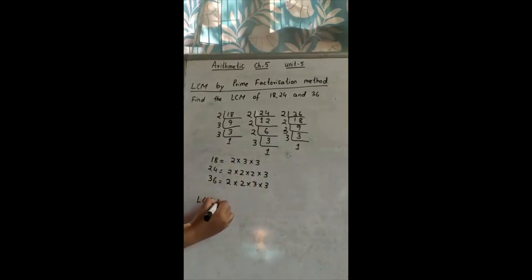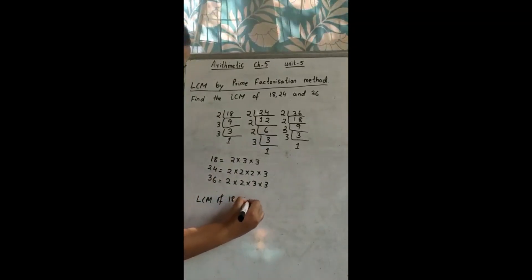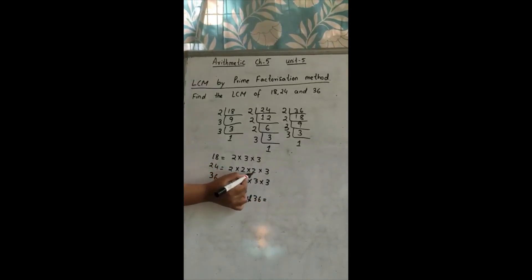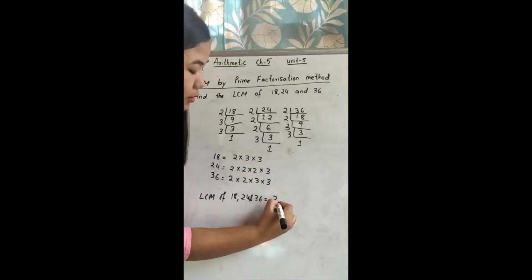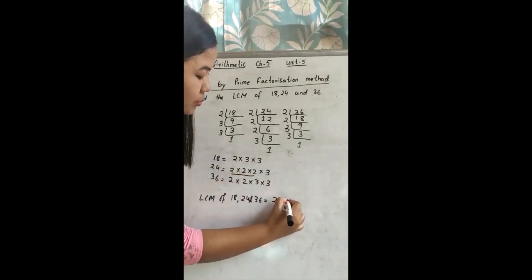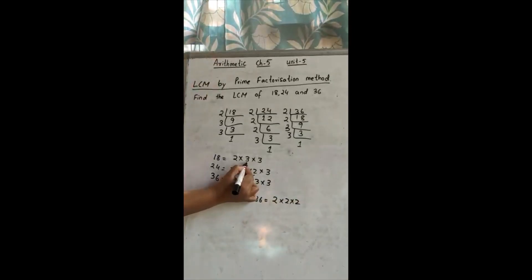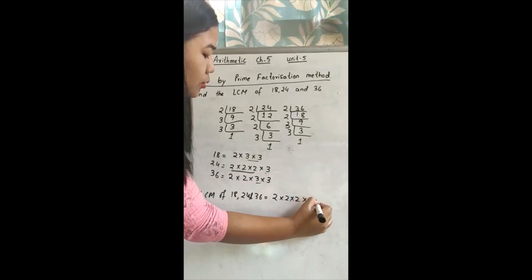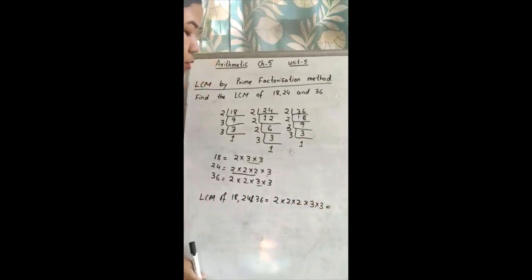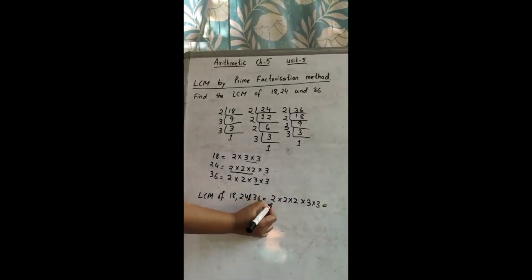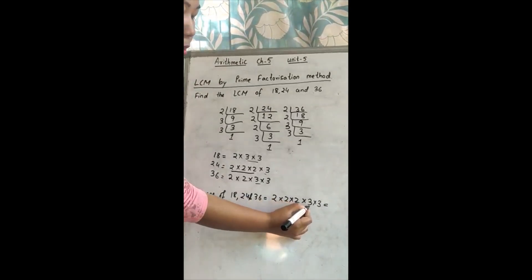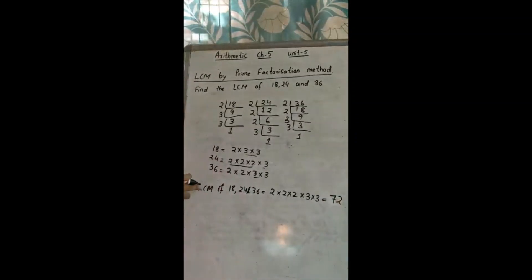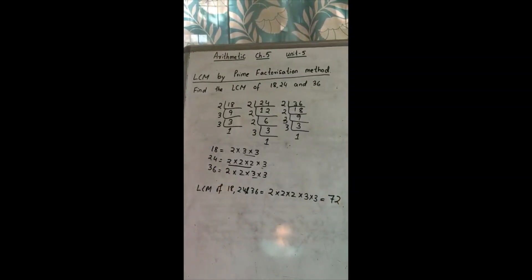So LCM of 18, 24, and 36 — now you see, 2 is repeated how many times? 3 times. So we have to write 2 three times. Now 3: here it is repeated 2 times, here 2 times, here 1 time. So we have to write 3 two times. So now you multiply: 2 × 2 = 4, 4 × 2 = 8, 8 × 3 = 24, 24 × 3 = 72. So the LCM of 18, 24, and 36 is 72.